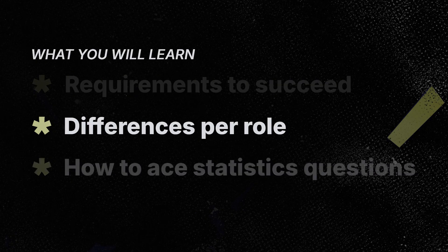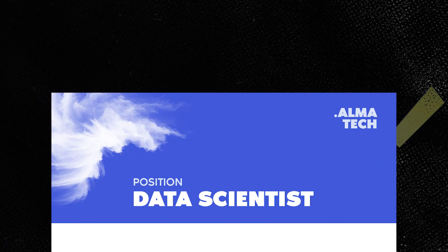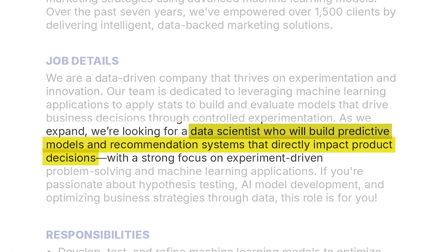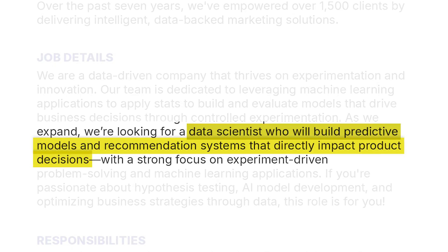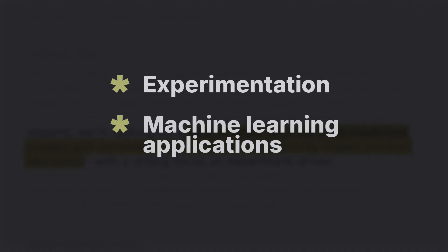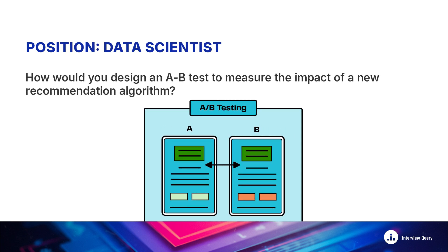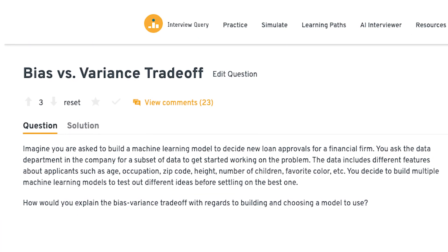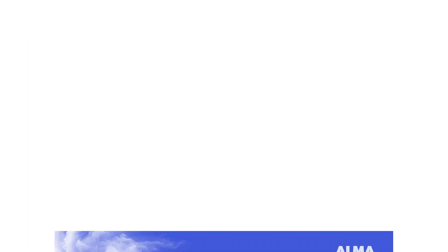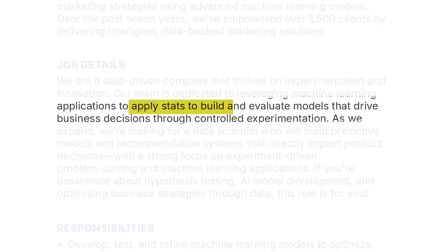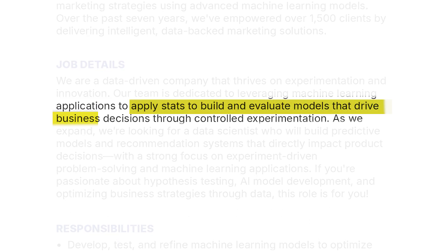Let's talk about how stats questions vary by role. Most people don't realize that stats questions are going to be pretty different depending on what role you're interviewing for. Data scientists build predictive models and recommendation systems that directly impact product decisions, which is why their interviews focus heavily on experimentation and machine learning applications. You'll get questions like: how would you design an A/B test to measure the impact of a new recommendation algorithm? Or explain bias-variance trade-offs and how they affect model performance. They really want to see if you can apply stats to build and evaluate models that drive business decisions through controlled experimentation.